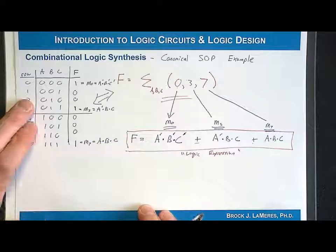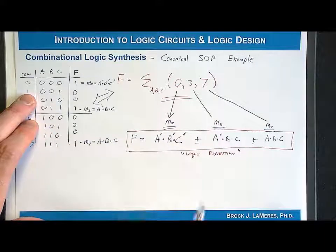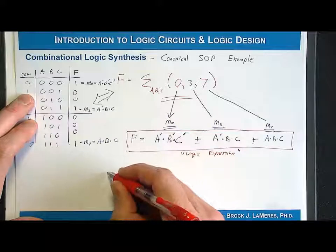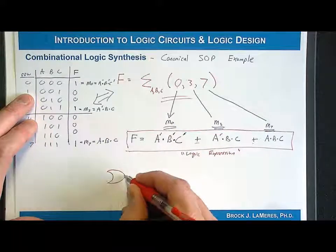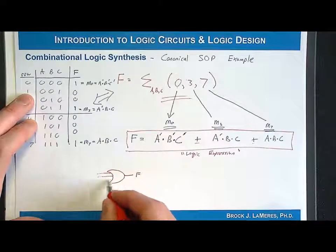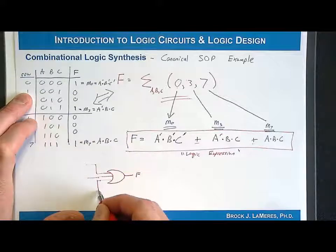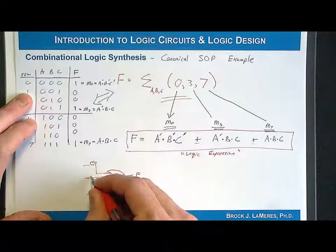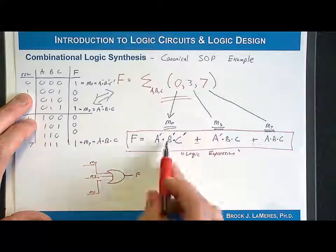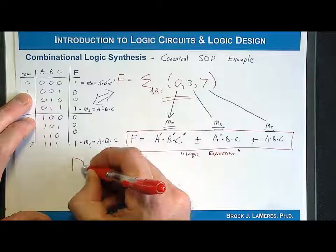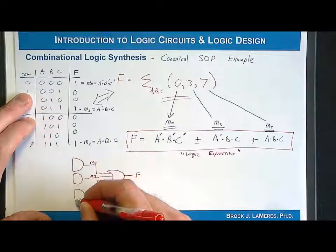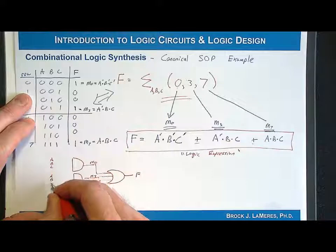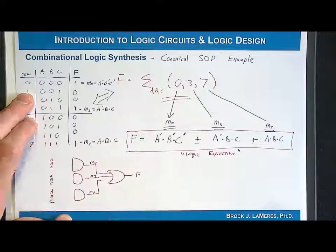I can take that and directly create the logic diagram. I know that I have an OR gate with three inputs — one input for each of the three product terms. The output is F. Then each of those inputs comes from a product term, labeled M0, M3, and M7. We have three AND gates, each with three inputs because they are minterms. I'll draw them with inputs A, B, C for each gate.